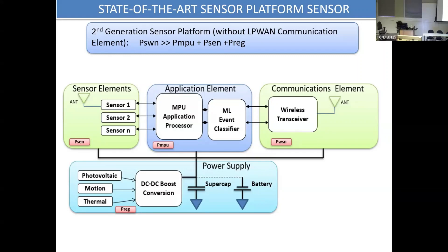You get into trouble fast if you try to design this with off-the-shelf parts because the power of the communication element exceeds by 10x — in some cases 20x — the power for the whole system from sensor to logic to machine learning. About 90% of sensor platform energy is consumed by the transmitter when you transmit digital information. The big commercial breakthrough in the last five years is ultra low power, very long distance LP-WAN components — low power wide area network silicon.